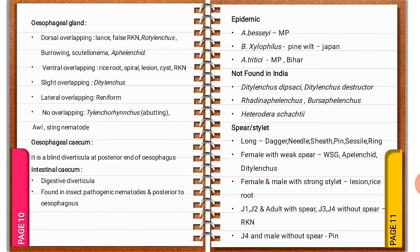J4 and male without spear is present in pin nematode. That's all for today, friends. We'll see more later. Thank you.